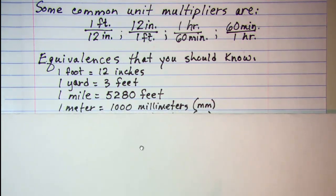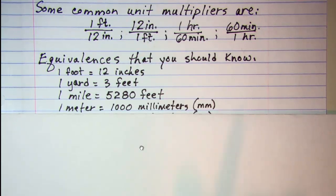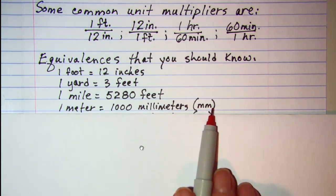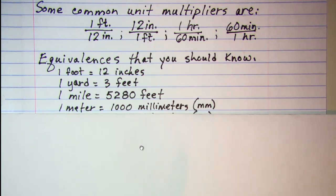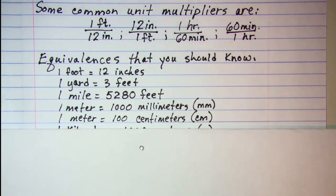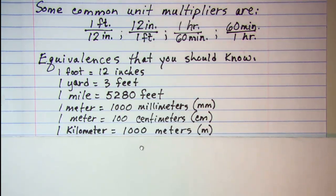One meter is a thousand millimeters. The abbreviation for millimeters is mm. Notice no period behind the mm just mm. One meter is also a hundred centimeters, and one kilometer is a thousand meters.